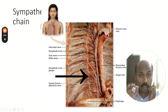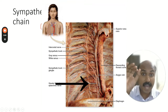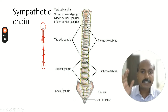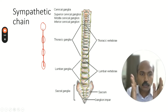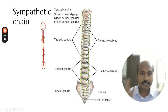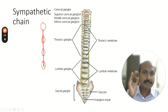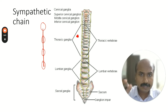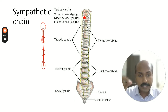This chain is seen just beside the vertebral column, so you can call it the paravertebral sympathetic chain. The sympathetic chain is found just close to the vertebra on both sides — that's why it's called the paravertebral sympathetic chain. If you want to access it, you have to go near the vertebral column.